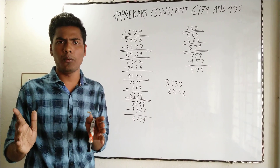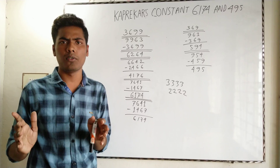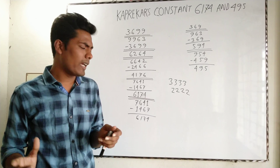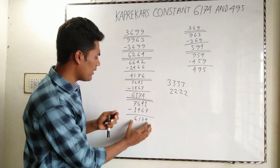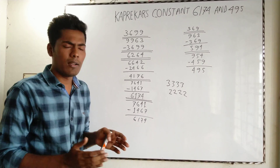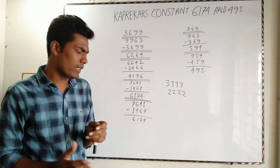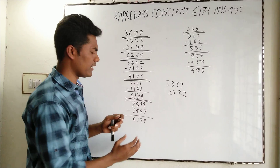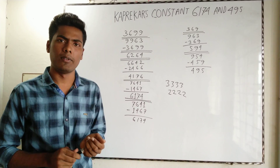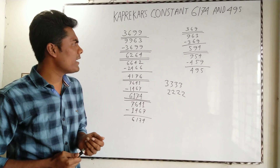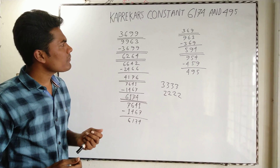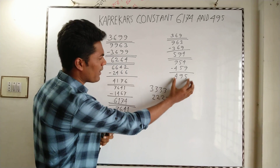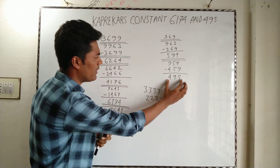The number of iterations needed may vary — it could be 1, 2, 3, 4, 5, 6, or more — but ultimately the result will always be 6174. The same Kaprekar's constant for three-digit numbers is 495, and the same procedure applies.